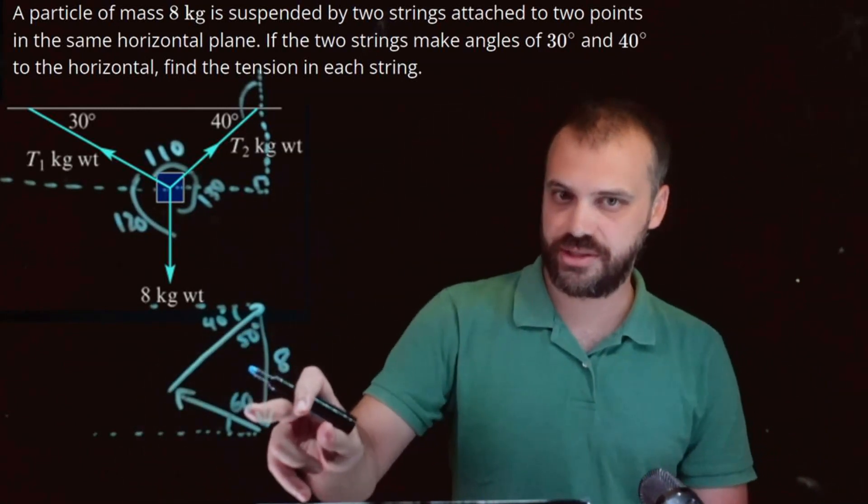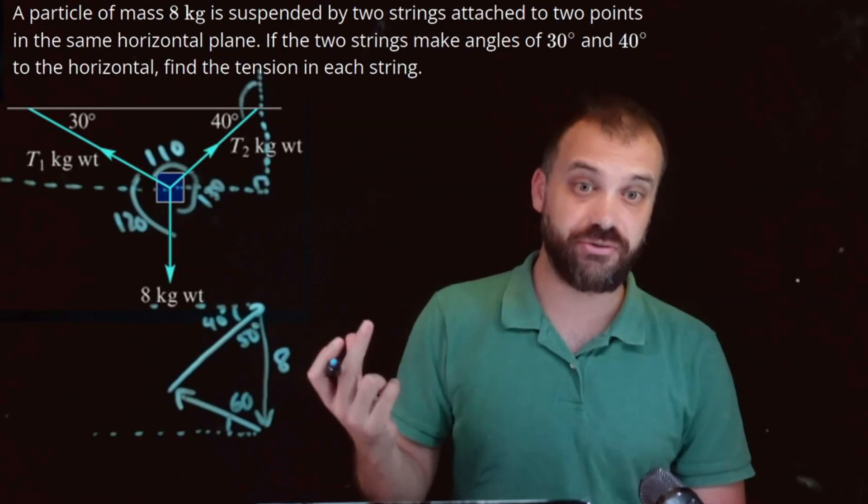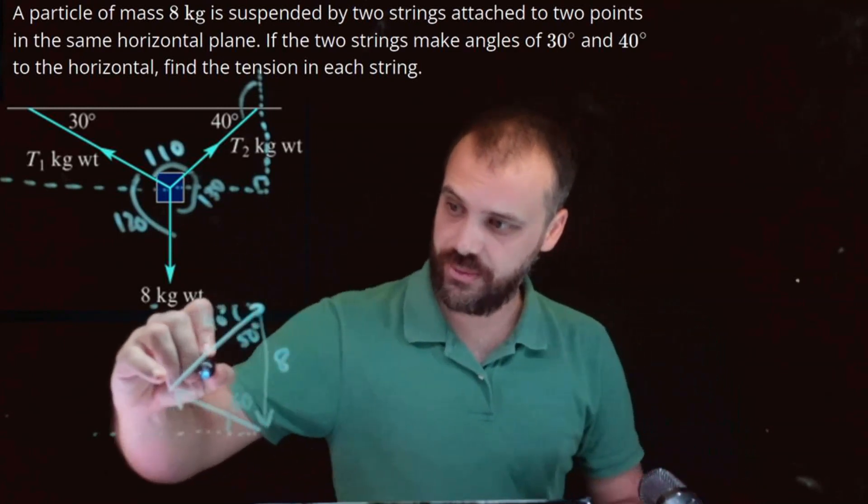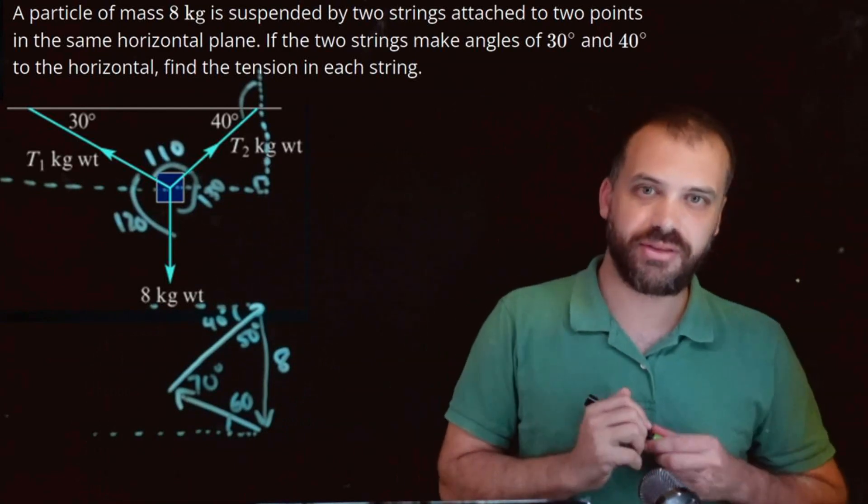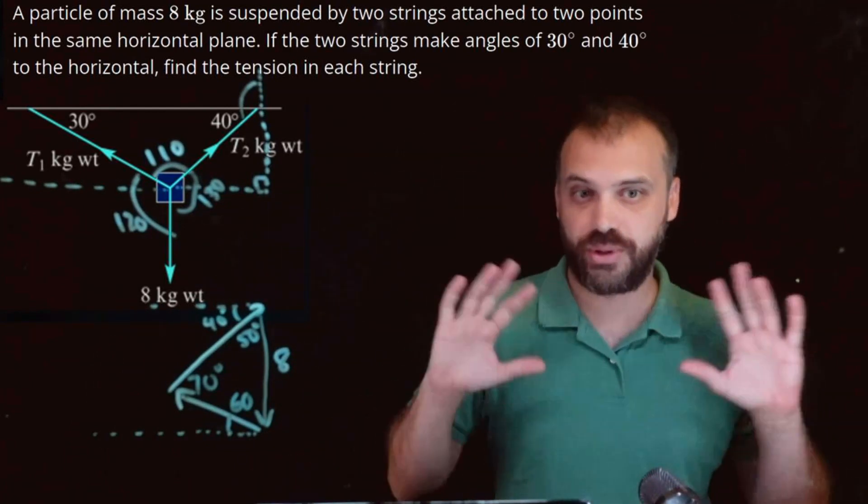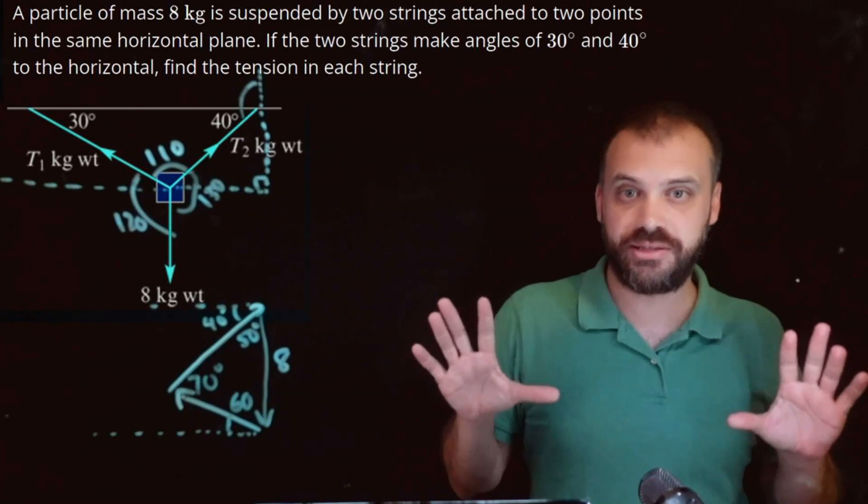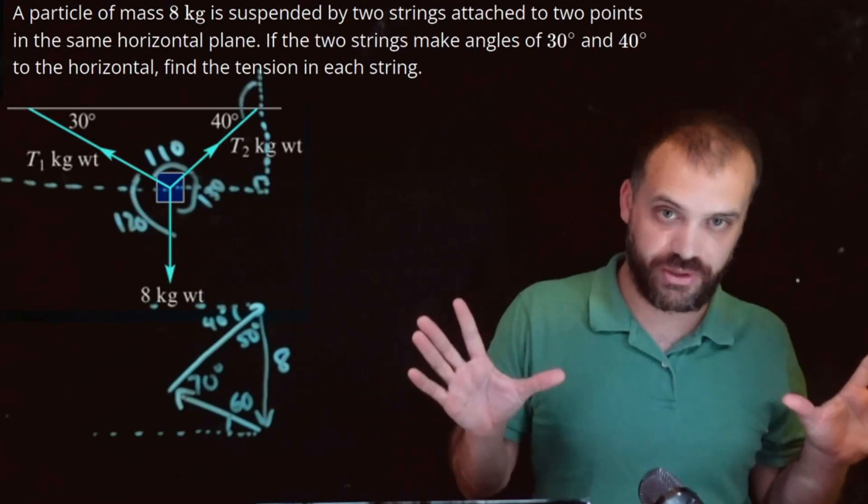And if that's 60 degrees, 60 plus 50 is 110. That means that that one is 70 degrees. Alright, that's really the hard part of these questions, right? Once that's done, you can figure out whatever you want to figure out.